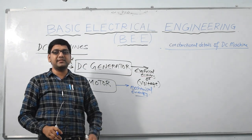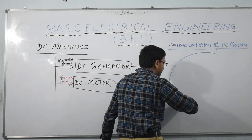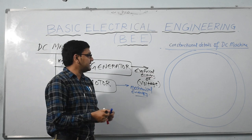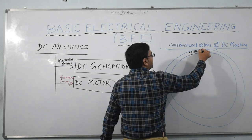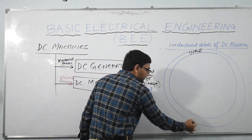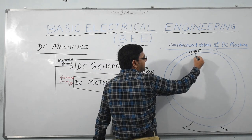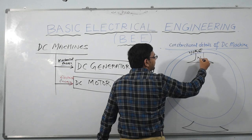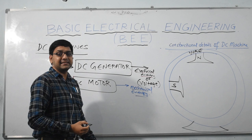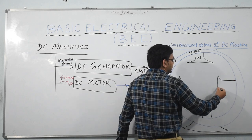The DC machine consists of a hollow cylindrical frame. When drawn on a two-dimensional board it looks like a circle, and this frame is named the yoke. It is a hollow cylindrical frame that acts as a rigid support to all the equipment enclosed in it. Inside the yoke there are magnetic poles: north pole, south pole, north pole, and south pole.